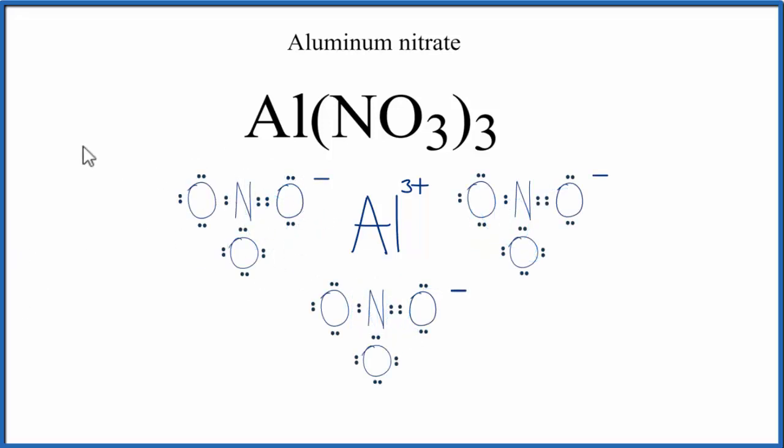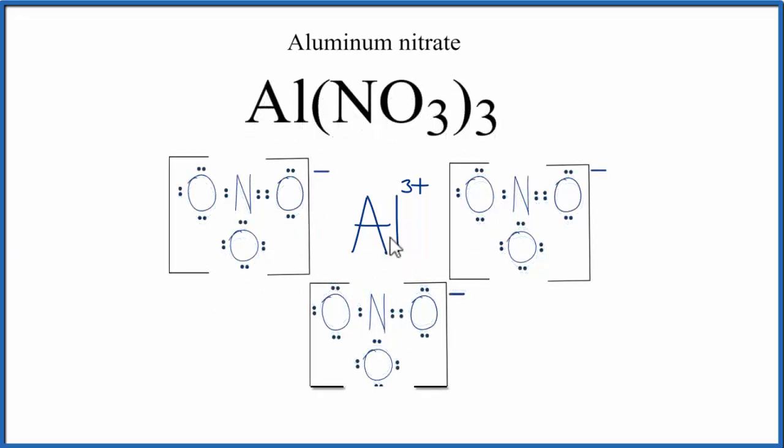Next, let's put brackets around each one of these. And you'll sometimes see brackets placed on the metal cation here in the center. That makes this the Lewis structure for Al(NO3)3, aluminum nitrate.